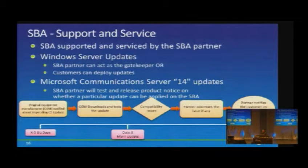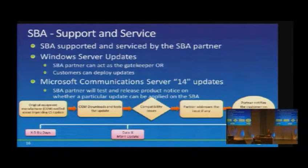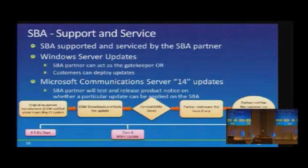When you enable a user for OCS or CS14, you associate them with a pool. In CS14, that pool can also be one of these SBA-type devices — setting what their primary registration point will be. Users homed on an SBA fall back to that parent pool as their backup registrar. Laptop users who move around are probably best housed in the central pool since we wouldn't want them homed in a location that might have WAN connectivity outages.